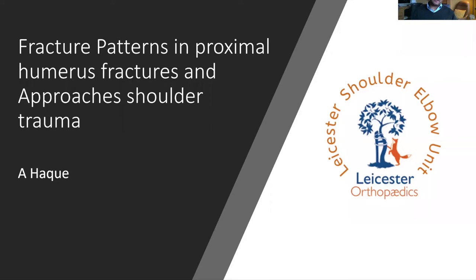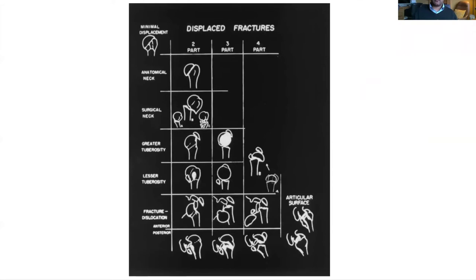Good morning, my name is Aziz Haq and I'm a trainee from Leicester. I'm here to talk about fracture patterns in proximal humerus fractures and approaches that are commonly used in shoulder trauma. I'm going to talk about fracture patterns by discussing Neer's classification. That was described many years ago but it's commonly understood and used both clinically, and you would probably end up using it in the exam. When shown a radiograph of a fracture, you'll probably say it's a two, three, or four part fracture and then carry on with your assessment.